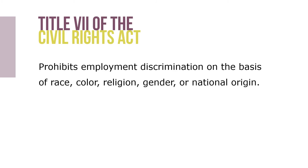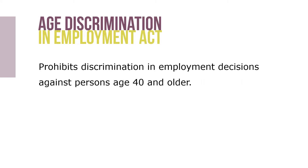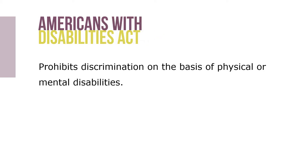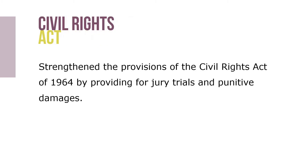Title 7 of the Civil Rights Act of 1964 prohibits employment discrimination on the basis of race, color, religion, sex, or national origin. The Age Discrimination and Employment Act of 1967 prohibits discrimination in employment decisions against persons age 40 or older. The Pregnancy Discrimination Act of 1978 prohibits discrimination in employment against pregnant women.